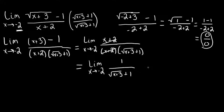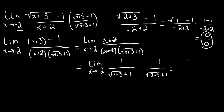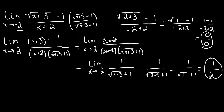Now let's go ahead and plug in negative 2 for x again and see what we get this time. We get 1 over the square root of negative 2 plus 3 plus 1, or 1 over the square root of 1 plus 1, which gives us 1 over 2. So the limit as x approaches negative 2 of the square root of x plus 3 minus 1 over x plus 2 works out to be 1 half, through the use of multiplication by the conjugate.